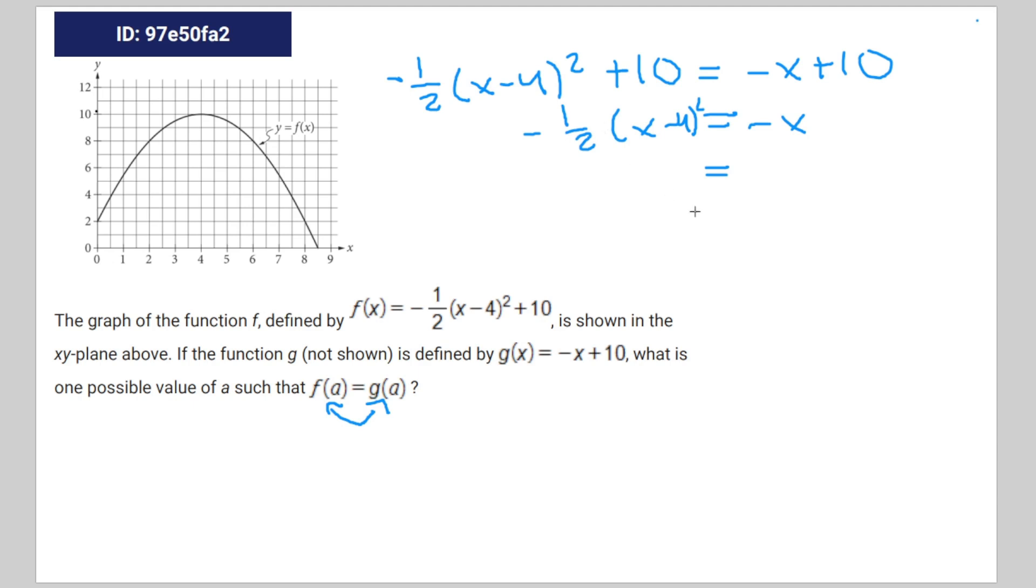Multiply both sides by -2, you're gonna get (x - 4)^2 = 2x.